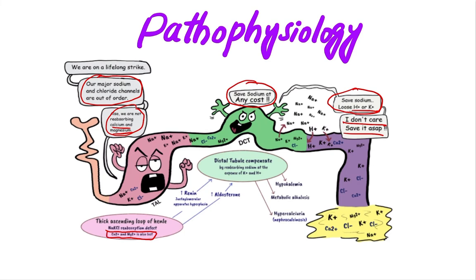When there is a defect in sodium-potassium-chloride reabsorption, and there is also loss of calcium and magnesium in the urine, there is activation of the renin-angiotensin-aldosterone system. There is distal tubule compensation by reabsorption of sodium at the expense of potassium and hydrogen ions, leading to hypokalemia, metabolic alkalosis, hypercalciuria, and nephrocalcinosis.